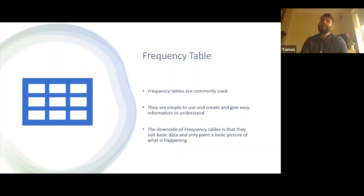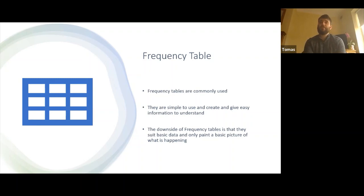The downside of frequency tables is they're usually that one-dimensional data we talked about earlier. We're usually just looking at the event — we're not really getting the location, the player who done it, or the time. It's usually very one-dimensional. We can look at a player-based one for individual stats, bringing in the player and the event, but we're not getting that second layer of information.